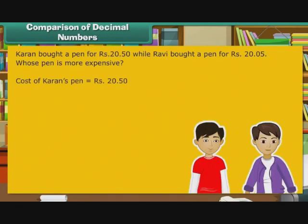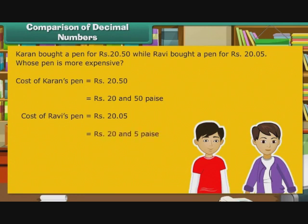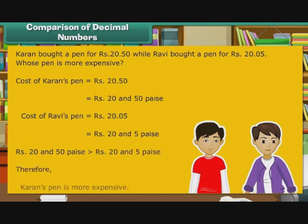The cost of Karan's pen is Rs. 20.50 and the cost of Ravi's pen is Rs. 20.05. Since Rs. 20.50 is greater than Rs. 20.05, therefore Karan's pen is more expensive.